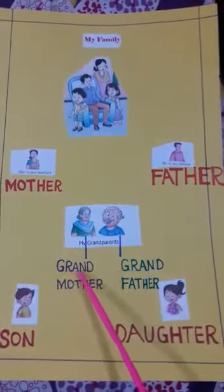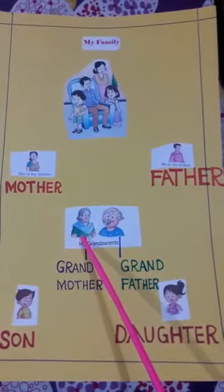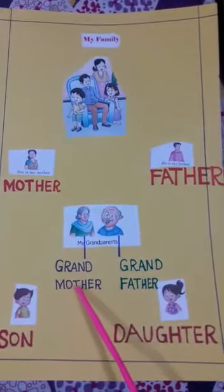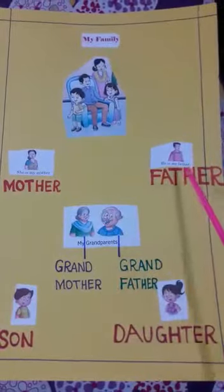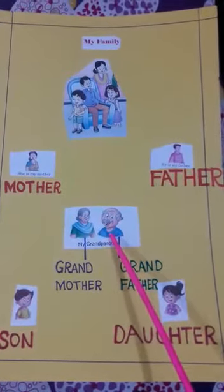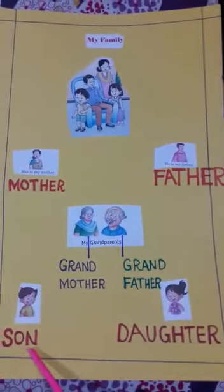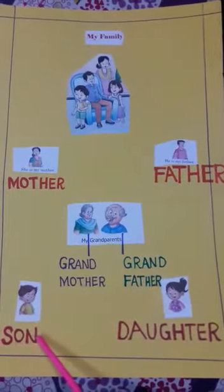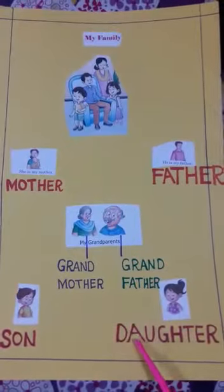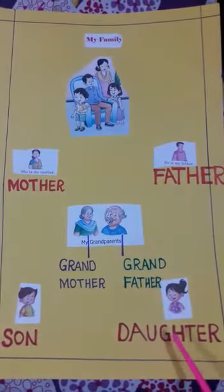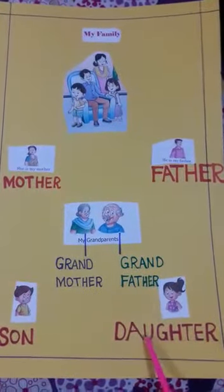She is grandmother. Father's mother is called our grandmother. He is grandfather. Father's father is called our grandfather. Son — S-O-N. Daughter — D-A-U-G-H-T-E-R. Daughter.